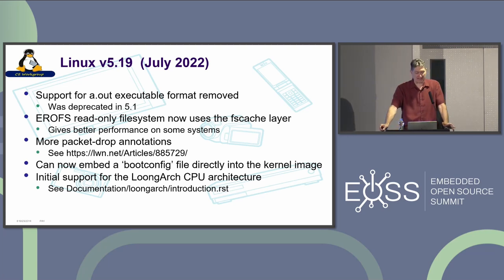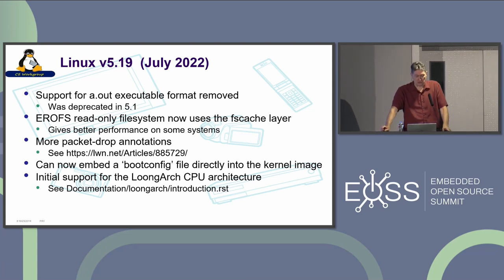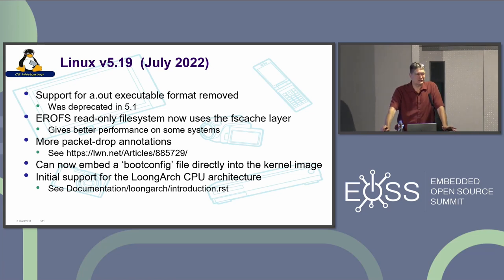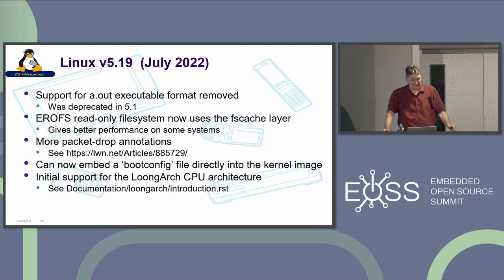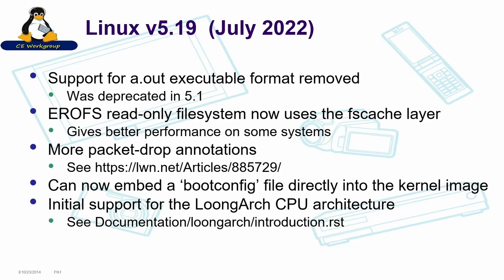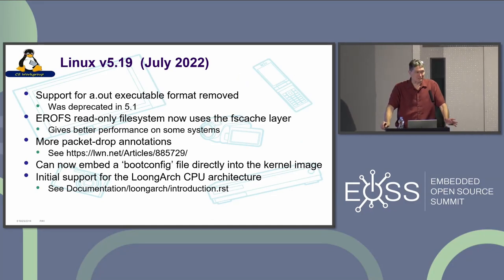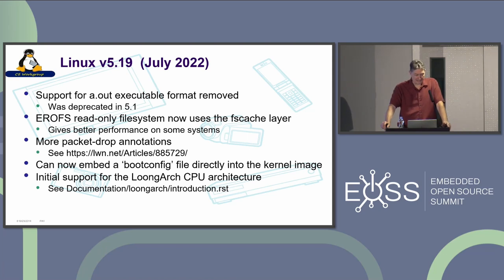One of the first things in 5.19 — about a year ago — was support for a.out being removed. We're now using ELF format executables, and a.out got removed from the kernel; it was deprecated earlier in 5.1. I don't think any of us are running a.out executables anymore, but it does show that stuff does cycle out of the kernel. The EROFS read-only file system now uses FSCache, giving better performance on some systems — it's already a pretty fast file system for read-only data, so it might be even better now. You can now embed a boot config file directly into the kernel image.